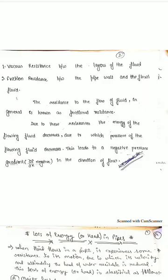Due to these resistances, energy decreases and pressure decreases along the length. This decrease in pressure along the length is called the pressure gradient, and it is negative because the pressure decreases from one section to the next. When these resistances are acting on the flowing fluid, the energy will decrease, leading to a negative pressure gradient. This is simply the variation in pressure along the length, decreasing from one section to the next — a negative pressure gradient.